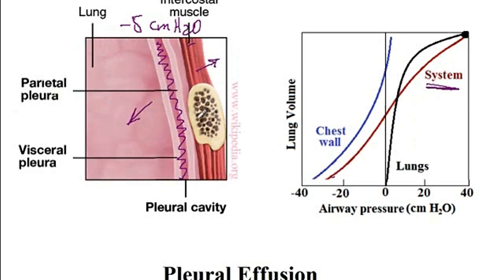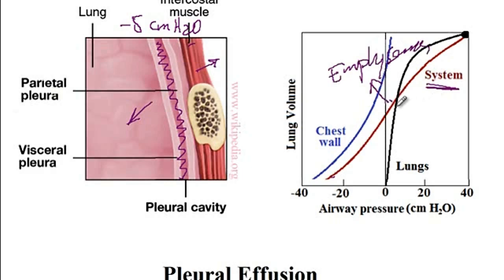Conditions that decrease elasticity of the lungs, for instance emphysema, will shift the system towards the chest wall. Conditions that make the lung more stiff, like fibrosis, since the lung is no longer compliant, will push the system down because the chest wall cannot resist it, so the whole thing will be pushed inside.